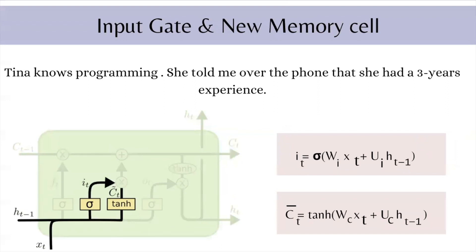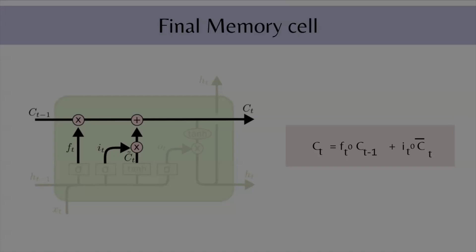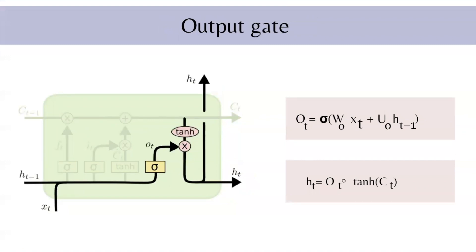In our example, 'she told me over the phone' is not important — only 'she had three years of experience' is important. The final memory cell is generated by forgetting some past information and adding some new information. ct is computed as ft (pointwise operation with ct-1, the previous cell state) plus the input gate (pointwise operation with ct-bar, the new memory). Then comes the final gate, which is the output gate — its purpose is to separate the final memory from the output.